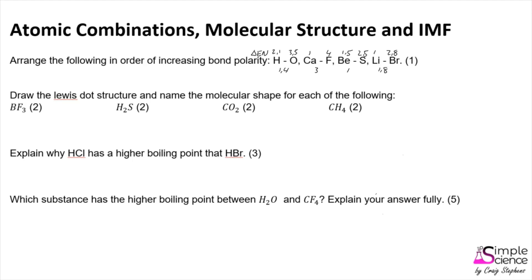We can then write the bonds in order of increasing bond polarity. The bond between beryllium and sulfur has the lowest electronegativity difference and is the least polar, followed by hydrogen and oxygen, then lithium and bromine, and finally the most polar bond is calcium and fluorine. This being a one-mark question would be marked either correct or incorrect — if you've calculated the electronegativity differences correctly and arranged them in increasing order, it would be marked correctly.